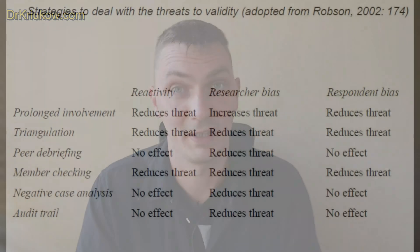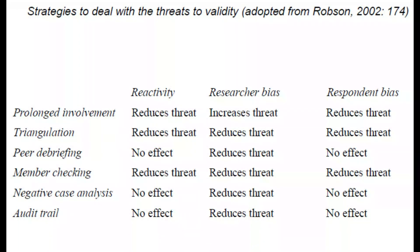In other words, validity in qualitative research is essentially about reducing different forms of bias. Although there are different terminologies and templates for this, I like Robson's six strategies for reducing bias and increasing validity, to which I also like to add my own strategy — I'll do that at the end of this video.